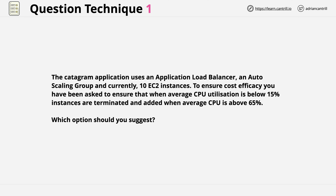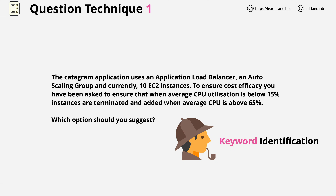Lengthwise this is pretty average for the pro level exam — some questions are much longer. If you're using the question-first approach, step number one is to quickly read the question and then perform keyword identification. Because the pro level exams are as much about comprehension as they are about technical skills, you need to reduce the time required to understand the question and the answers. What you're looking for is to identify words which matter and those which don't, and because questions can have radically different structures, much of this just comes with practice. We're looking for the parts of the question which materially impact which answers we might need to select.